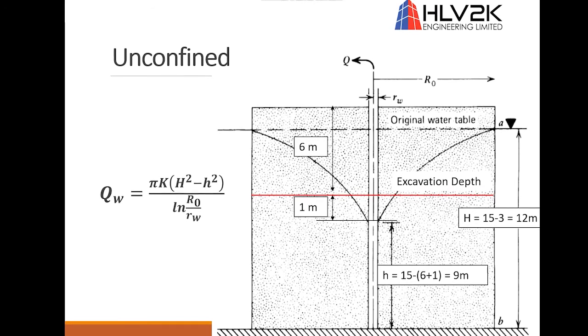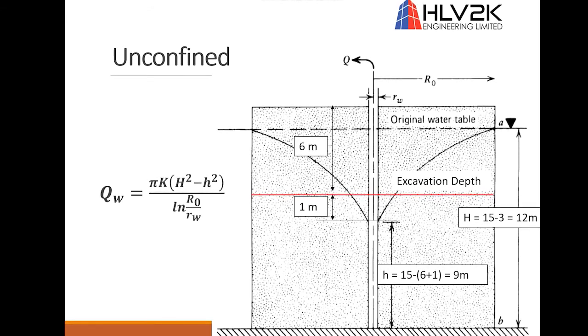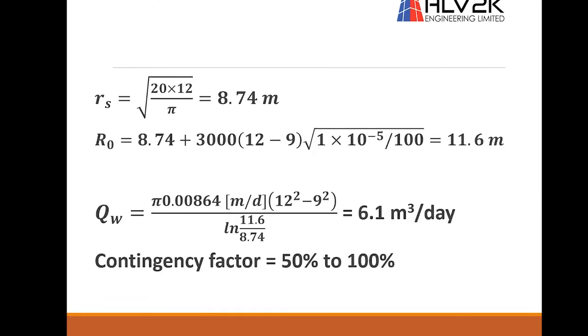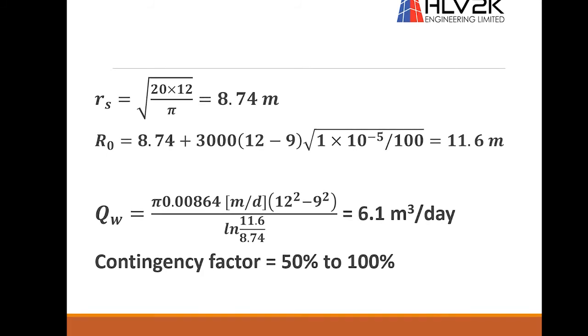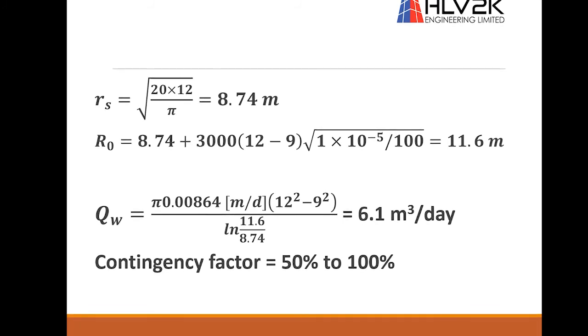So we want to bring down the water from 12 meters to 9 meters and we are using the unconfined equation. First we calculate the equivalent radius which would be 8.74. This means if we had a circular excavation instead of the rectangular, the radius would be 8.74 meters. It has the same area as the rectangular.